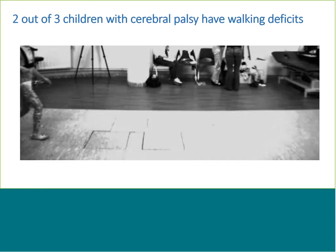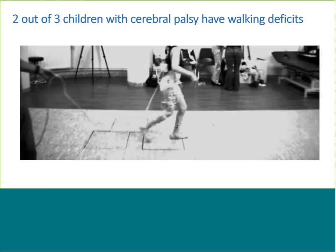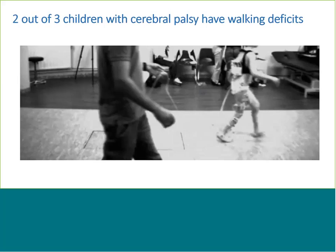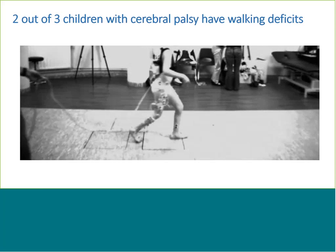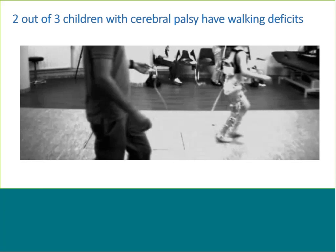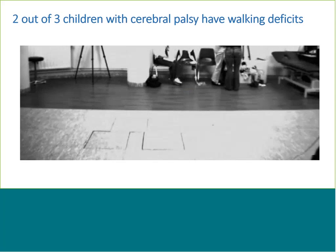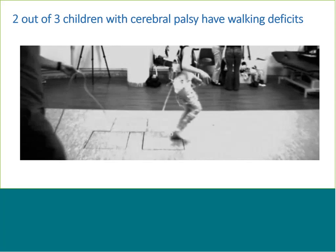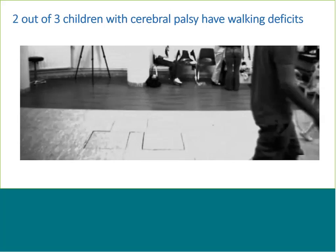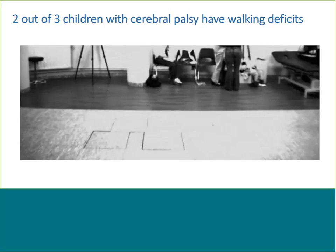Here you see a CP child that presents a typically flexed posture of the ankle, knees, and hips. This gait pattern is energetically inefficient due to the excessive muscle forces, and it will, in the end, in combination with pain, amplify the child's capacity for independent ambulation.